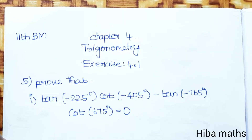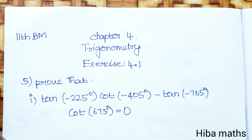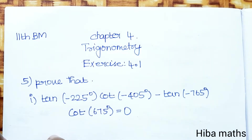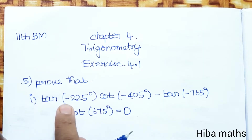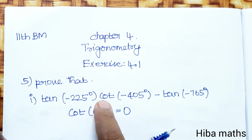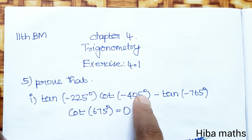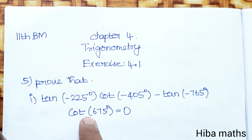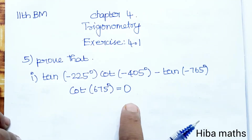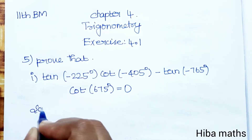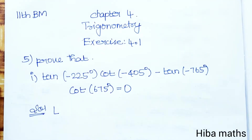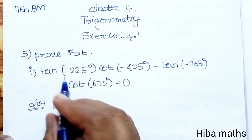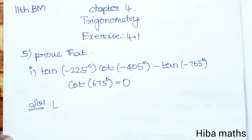Hello students, welcome to Heba Max 11 Standard Business Math, Chapter 4 Trigonometry, Exercise 4.1, 5th question. Solve and prove that tan(-225°)·cot(-405°) - tan(-765°)·cot(675°) = 0. We solve the LHS and prove the RHS is 0.